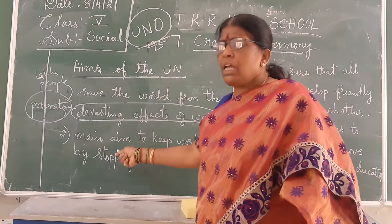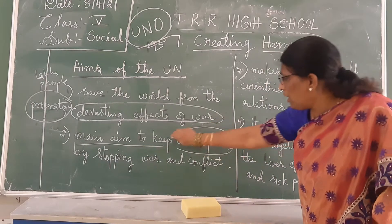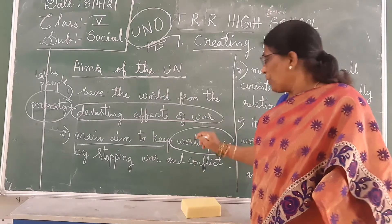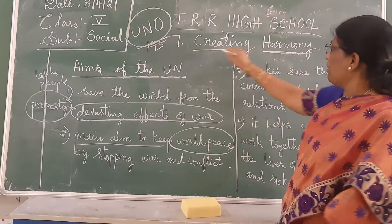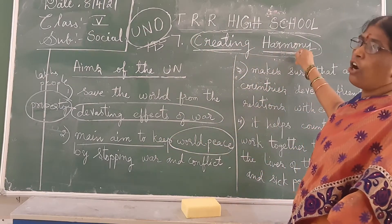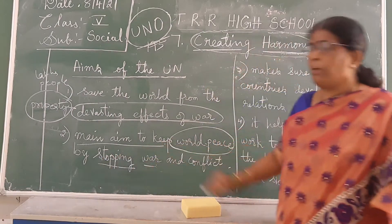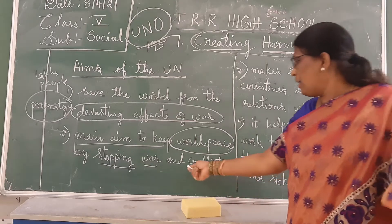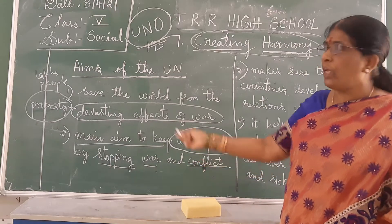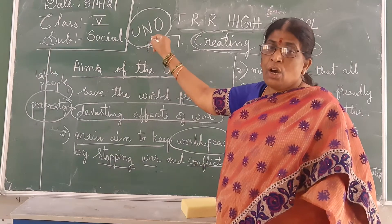Not only that — the main aim of the UNO is to keep world peace. Peace. Creating harmony. To keep world peace by stopping war and conflict. This is the main aim of the United Nations Organization.